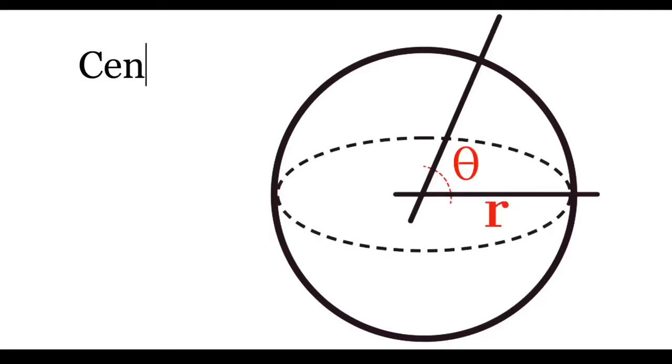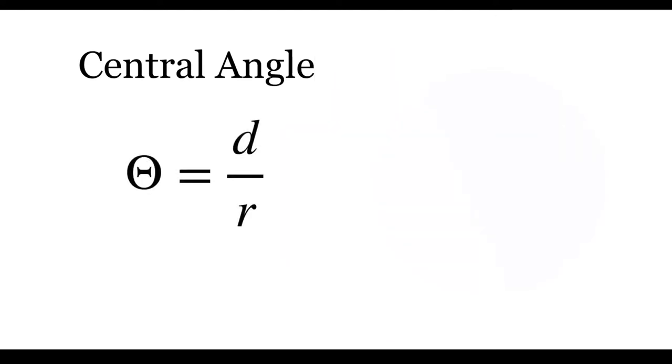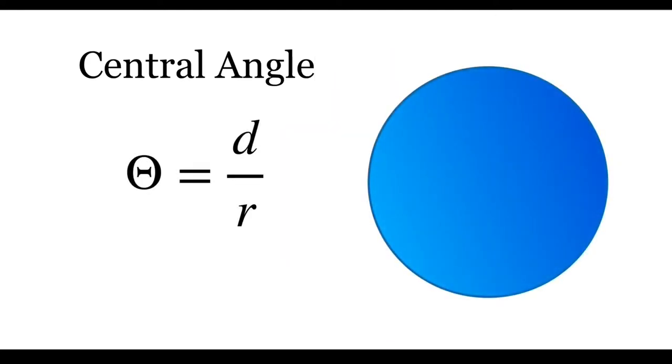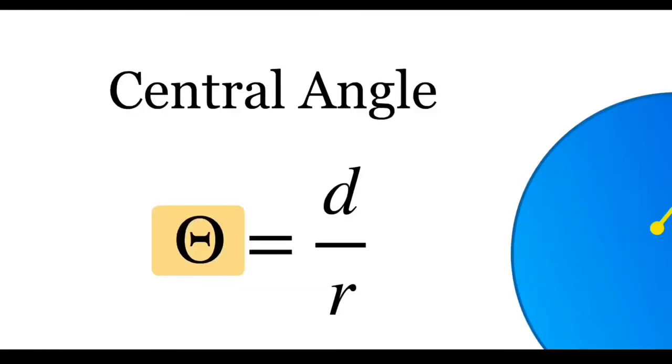The relation between the distance and angle for the sphere is given by the formula of central angle: theta equals d divided by r, where theta is the central angle, r is radius, and d is the distance between two points on the sphere. A central angle is determined by Haversine formula.